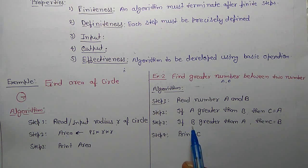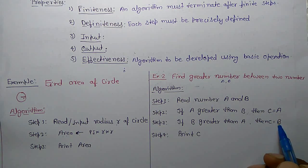Next step, if B is greater than A, then C equals B. So print C. C will hold the greater value, either A or B. So this is the algorithm for finding greater number between two numbers.